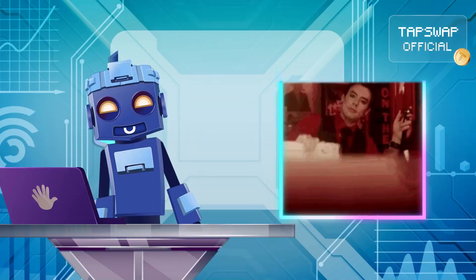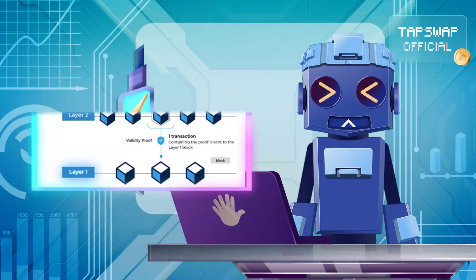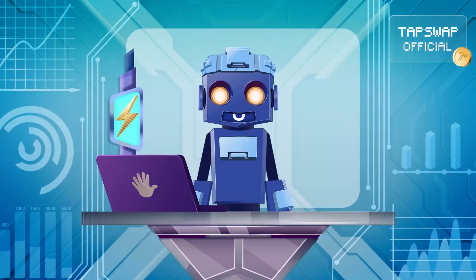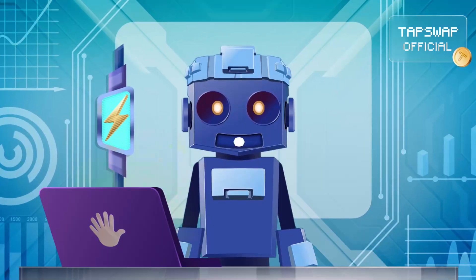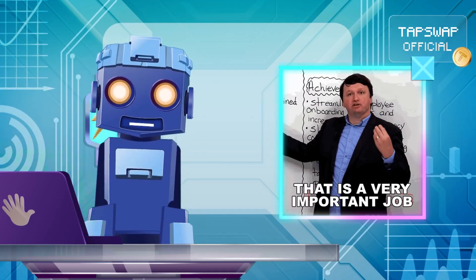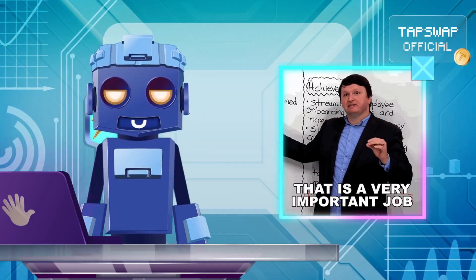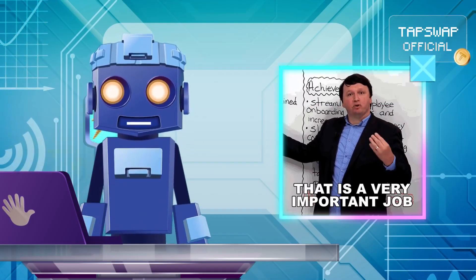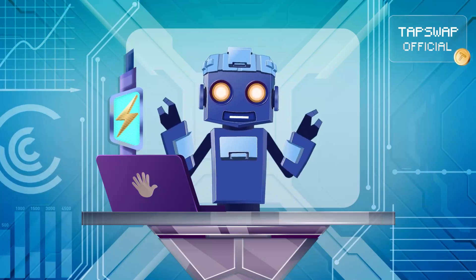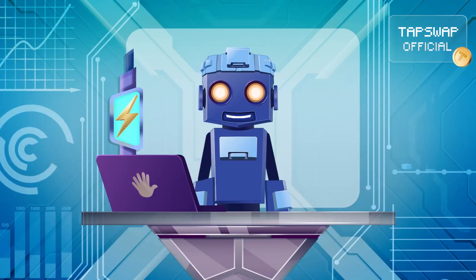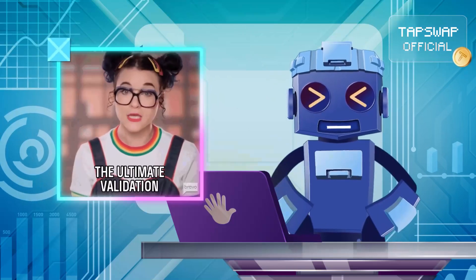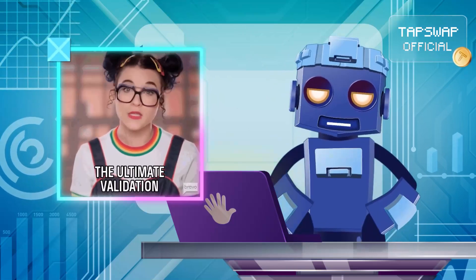The first component is on-chain smart contracts. They're deployed on the layer 1 blockchain to manage the ZK rollup protocol. They have critical tasks like tracking state updates, managing deposits and withdrawals, and storing rollup batches. A specific type of contract, called the verifier contract, validates the zero-knowledge proof submitted by rollup operators.